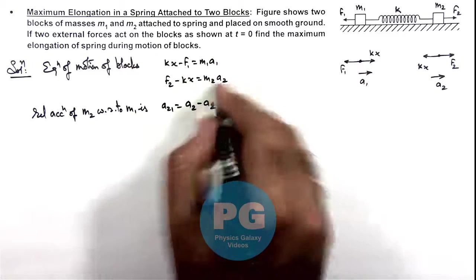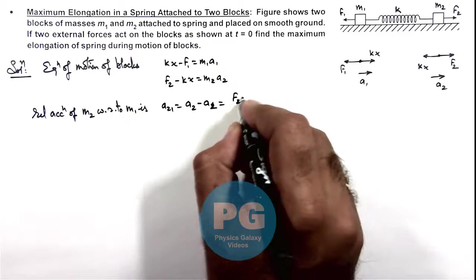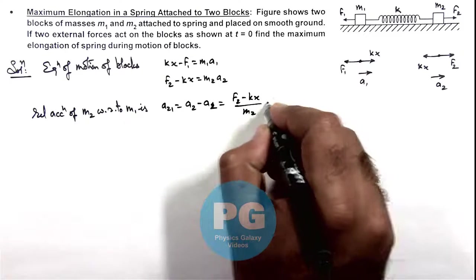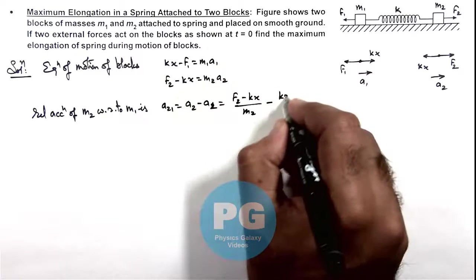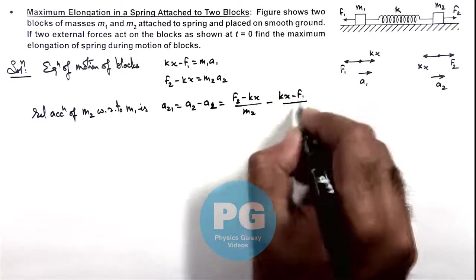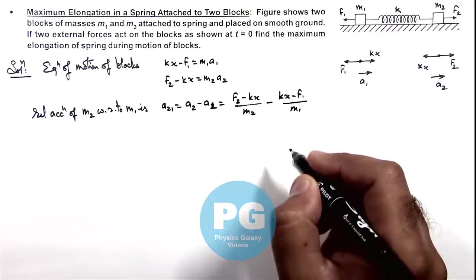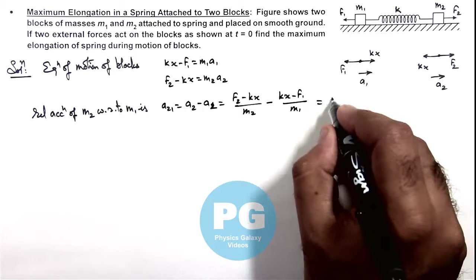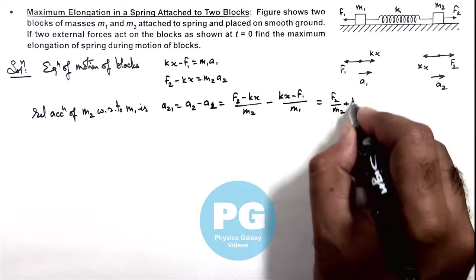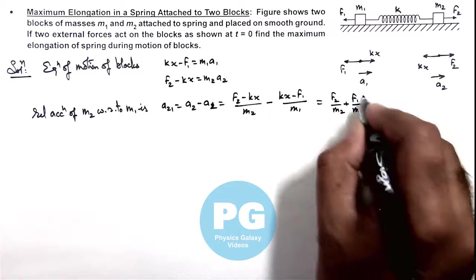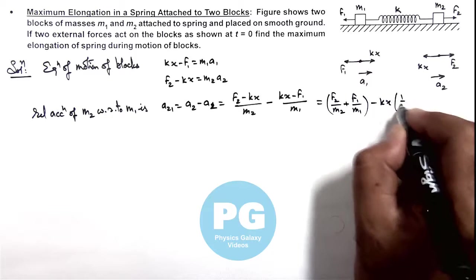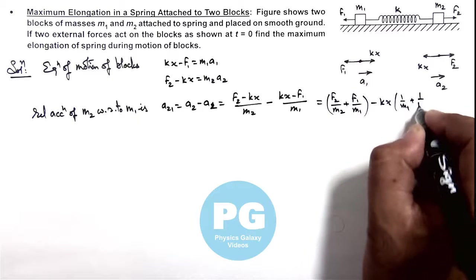a₂ is given as f₂ minus kx divided by m₂, minus a₁ is kx minus f₁ divided by m₁. And this can be given here as f₂ by m₂ plus f₁ by m₁ minus kx times 1 by m₁ plus 1 by m₂.